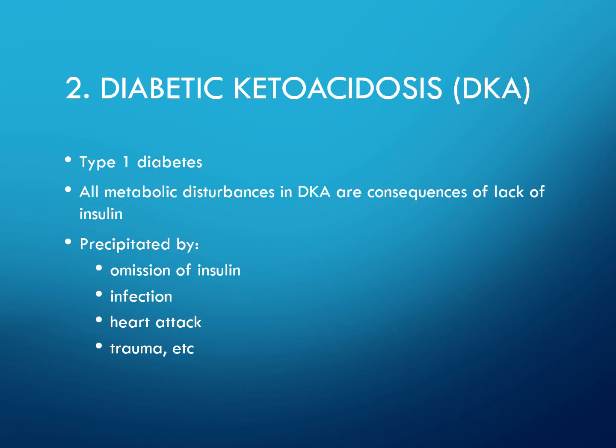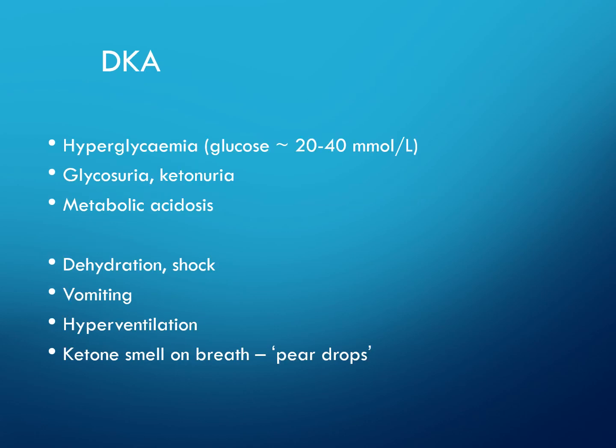Diabetic ketoacidosis is more predominant in type 1 diabetes. All metabolic disturbances in DKA are consequences of a lack of insulin. It is precipitated by omission of insulin, infection, heart attack, or trauma. Features include hyperglycaemia, glycosuria, ketonuria, metabolic acidosis, dehydration, shock, vomiting, hyperventilation, and ketone breath — a characteristic pear-drop smell.